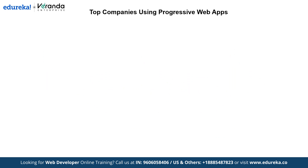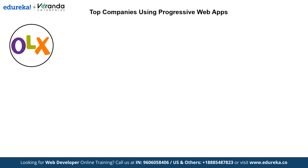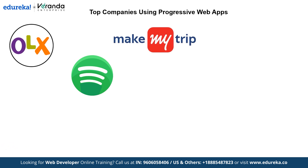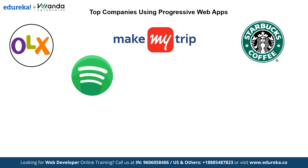Now let's explore some well-known companies that have successfully implemented progressive web apps. The first is OLX, one of the world's largest classified platforms, which has embraced progressive web apps to provide a fast and reliable user experience. Spotify, the music streaming giant, has also adopted progressive web apps to offer a seamless experience across devices. Similarly, MakeMyTrip, a popular Indian travel booking platform, uses progressive web apps to provide a quick and easy booking experience for their customers. Starbucks, the coffee giant, has leveraged progressive web apps to offer a mobile-friendly ordering experience. In the social media landscape, Twitter has adopted progressive web apps to deliver a faster and more reliable user experience.